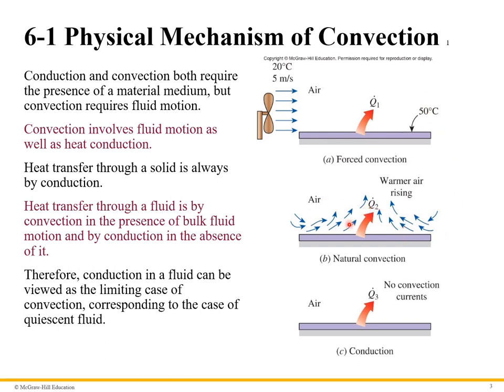You also have natural convection, where the air itself, as it approaches the surface of the hot plate, can get warmed, and then warm air rises, and that takes away the heat as well. When you have no air currents, it's strictly conduction. That's a limiting case. Conduction can be looked at as a limiting case of convection corresponding to when you don't have any currents at all.